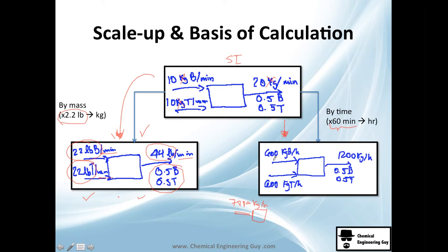Just multiply by 60. It will be 10 times 60 equals 600, 600 here, 1200 here. Same product, composition doesn't change. You don't believe me? You can check: 600 plus 600 you will get 1200, and 600 divided by 1200 will give you half and half.